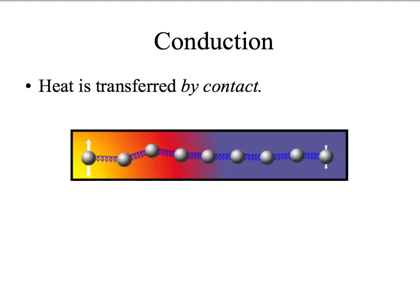What you just saw is an example of heat conduction, which means that heat is transferred by contact. In a solid, atoms are linked together by little chains we call bonds. If one atom starts moving, the little chain transmits this movement to the following atom, and that keeps being transmitted to the next one and the next one until it reaches the last atom. Since heat is nothing but movement, heat will slowly move from the beginning of the chain to the end until the whole solid has been heated up.